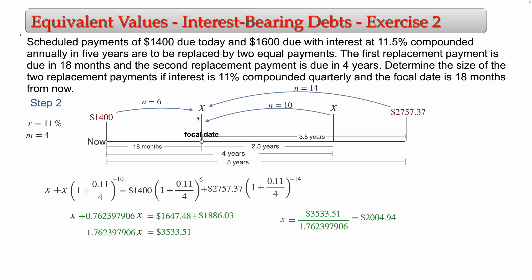So the two equal replacement payments will both be 2,004.94. The size of each equal replacement payment is 2,004.94. You pay 2,004.94 at 18 months and 2,004.94 in four years, and you have paid the total debt.